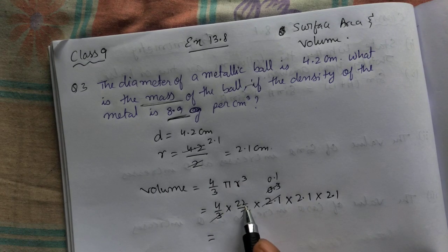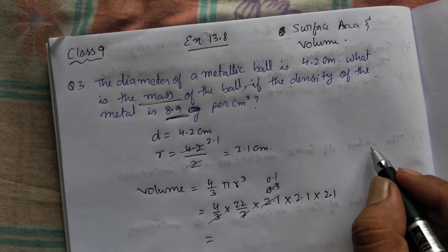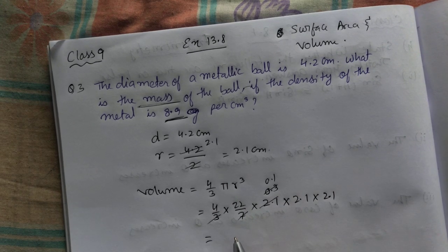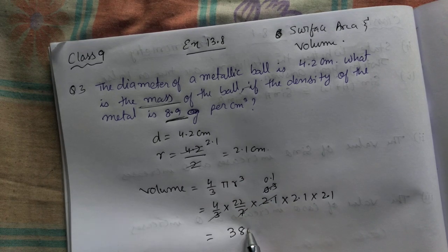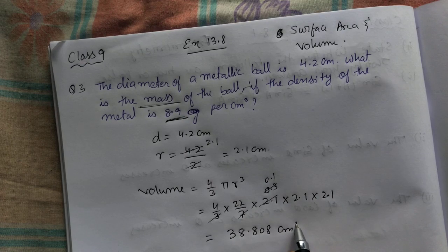If you multiply, 4 into 22 is 88, 88 into 21 is 441. If you multiply and put 3 decimal places, you'll get 38.808 centimeter cube.